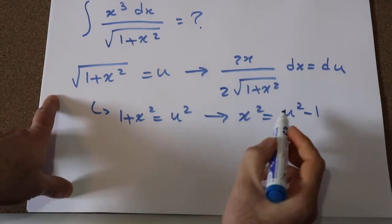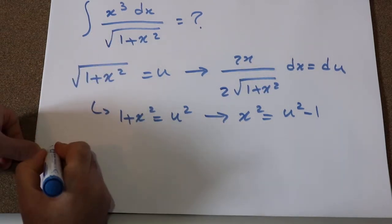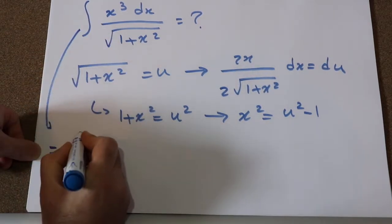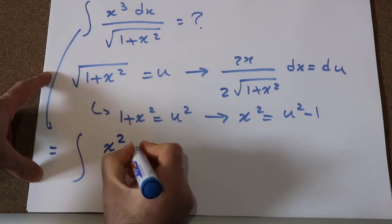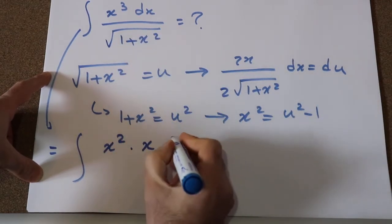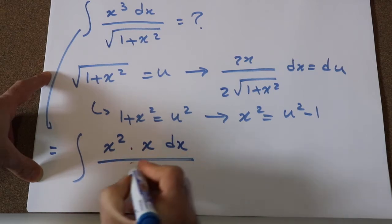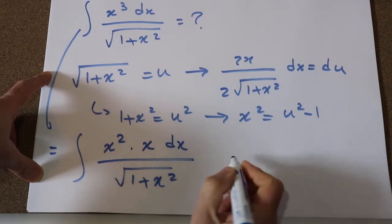So now let's substitute this expression into this integral. So you can rewrite this integral, the original one, as instead of x³, I write as x² times x, then dx divided by square root of 1 plus x². Okay,